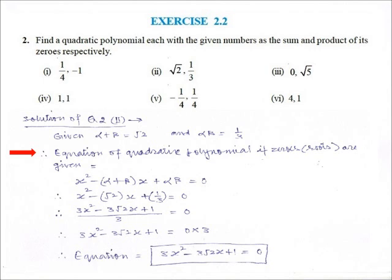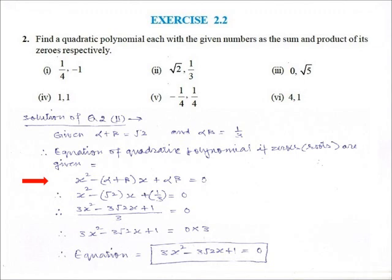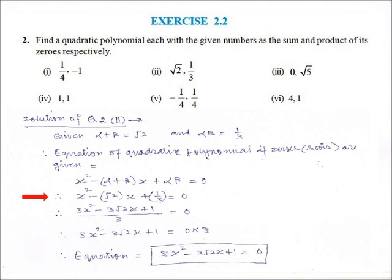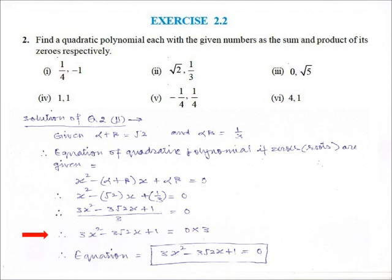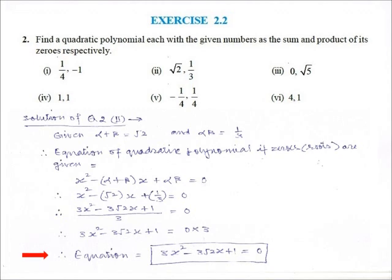Therefore, the equation of the quadratic polynomial, if zeros (that is, roots) are given, is x² minus (alpha plus beta)x plus alpha·beta is equal to 0. Putting the values of alpha plus beta and alpha·beta, we get x² minus √2·x plus 1/3 is equal to 0. Taking LCM, we get (3x² minus 3√2·x plus 1) upon 3 is equal to 0. Therefore, 3x² minus 3√2·x plus 1 is equal to 0.